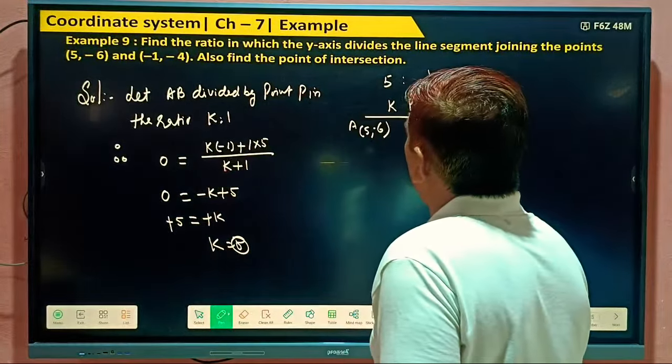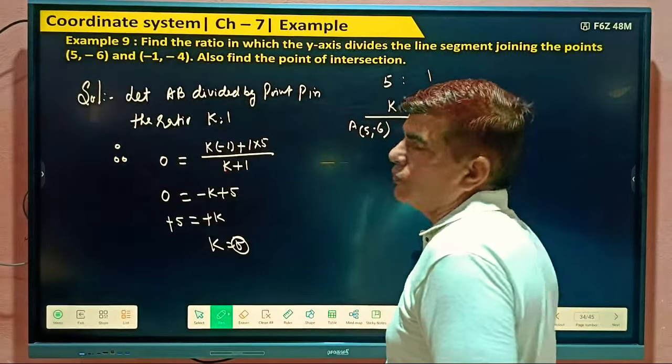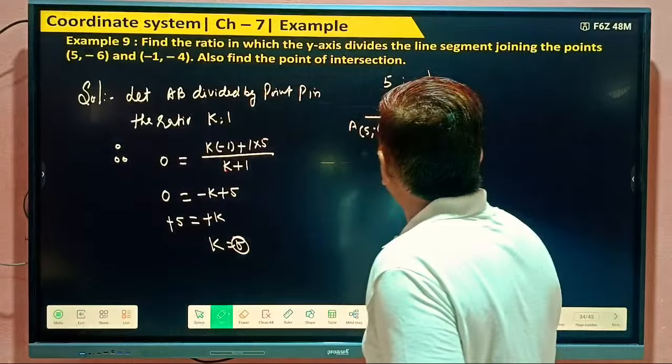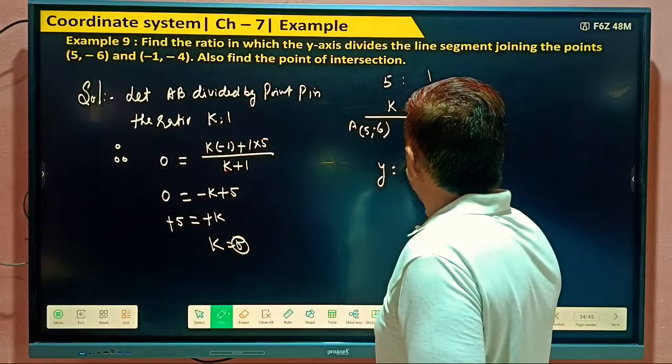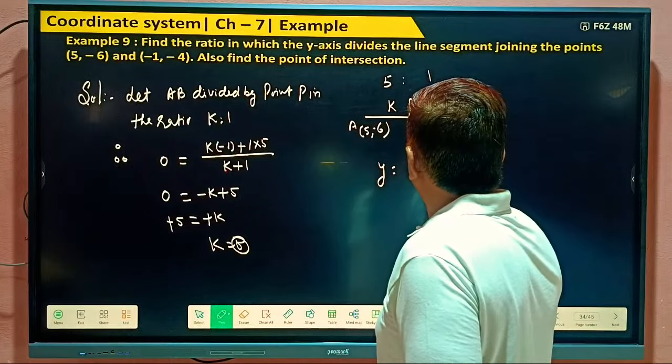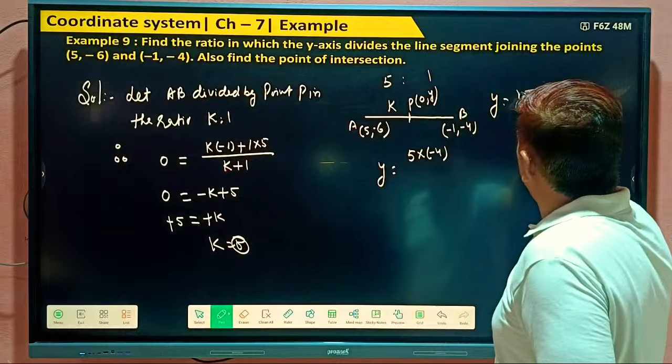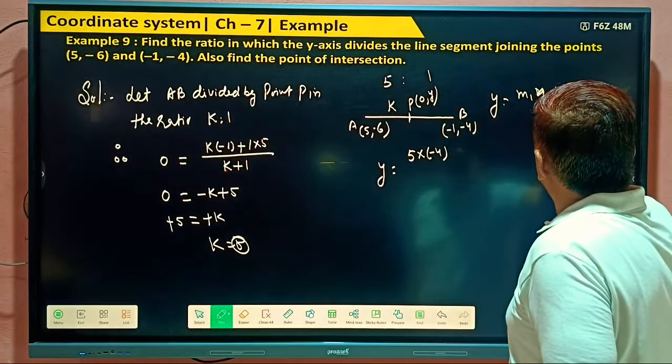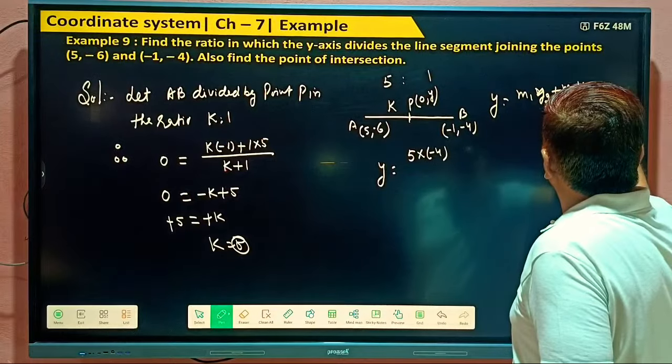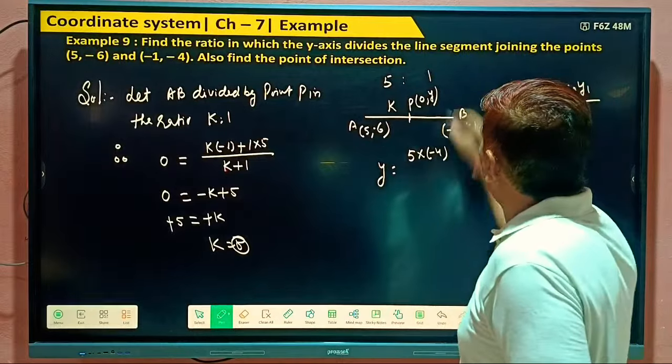Also find the point of intersection. Point of intersection meaning you have to find out the value of y. So we can find out, we can take Y equal to 5 into minus 4. Formula you know, Y equal to M1 Y2 plus M2 Y1 by M1 plus M2. What's your M1 here?